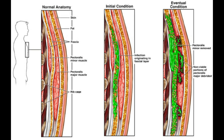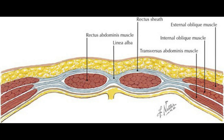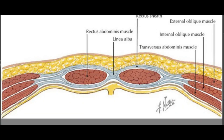The areas which are in green represent the purulent fluid within the abdominal wall. This is a diagram of the abdominal wall.